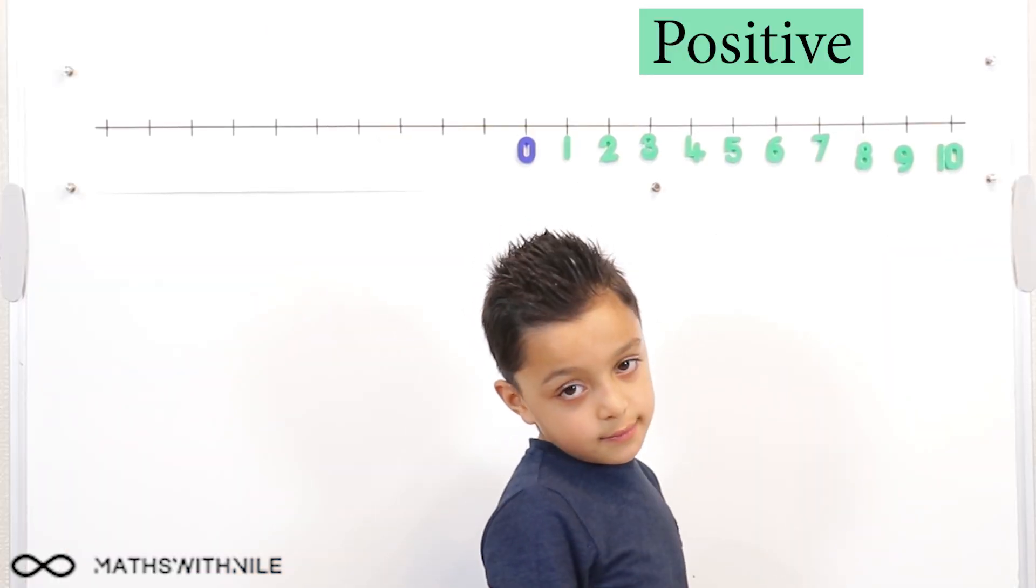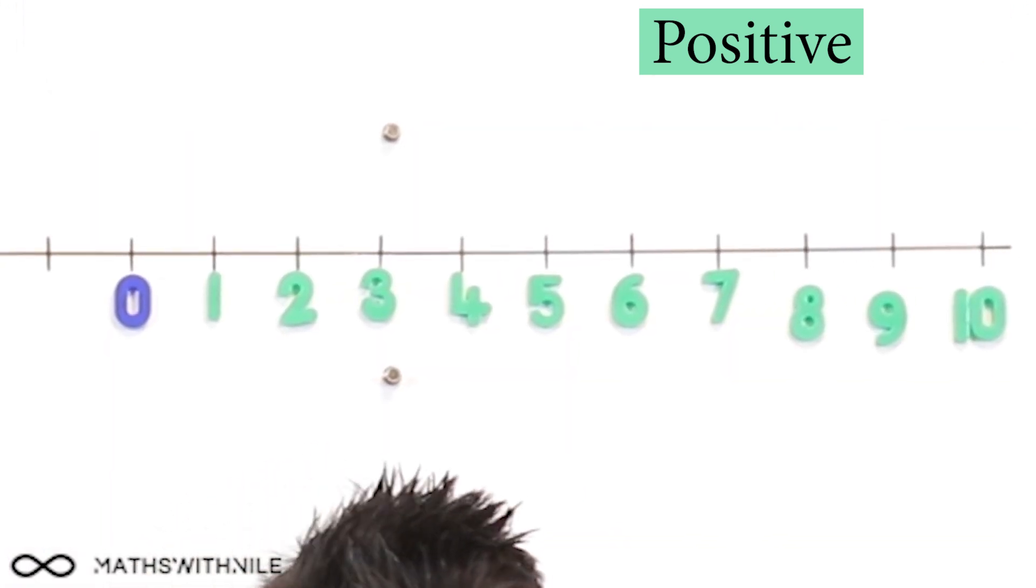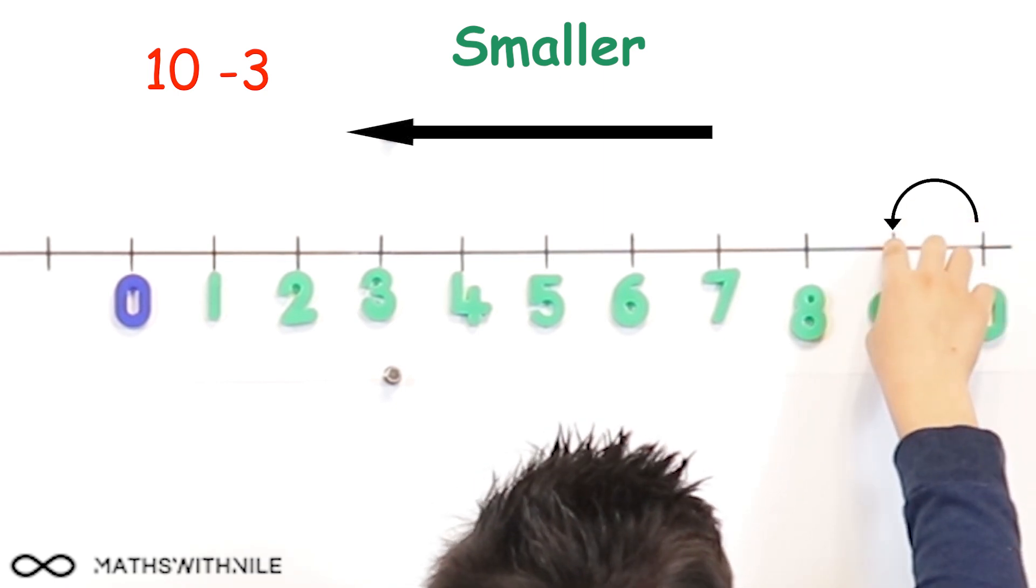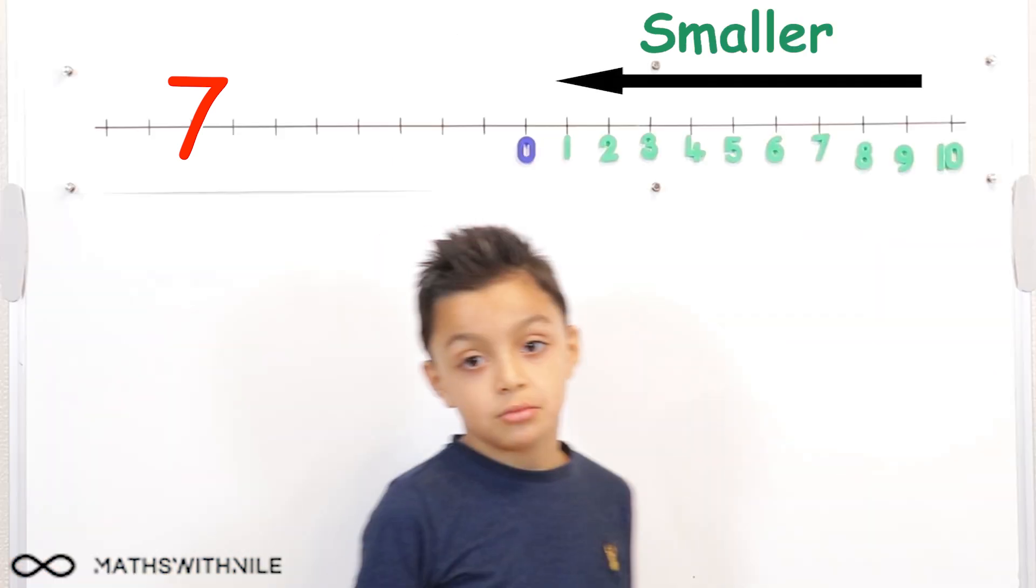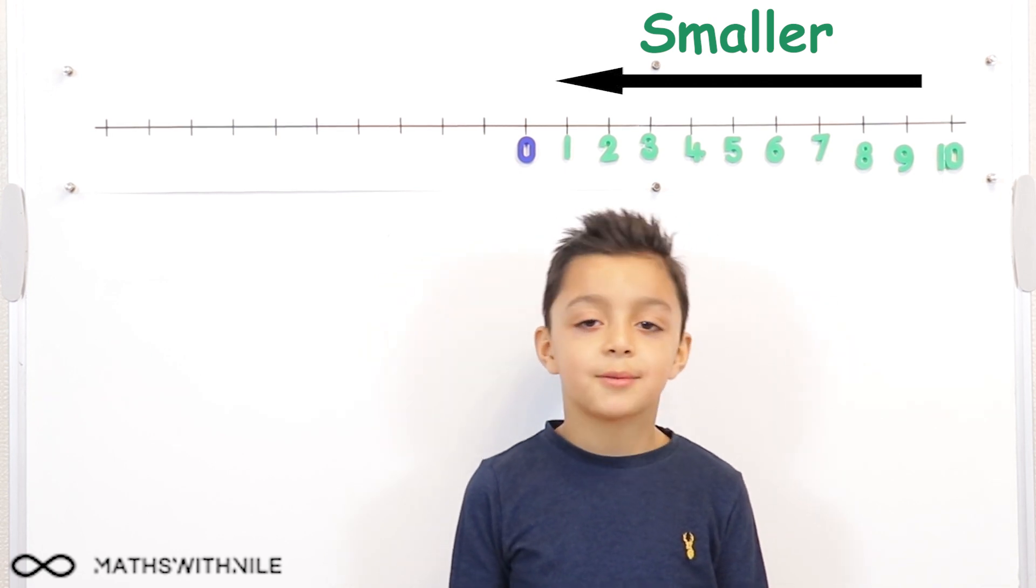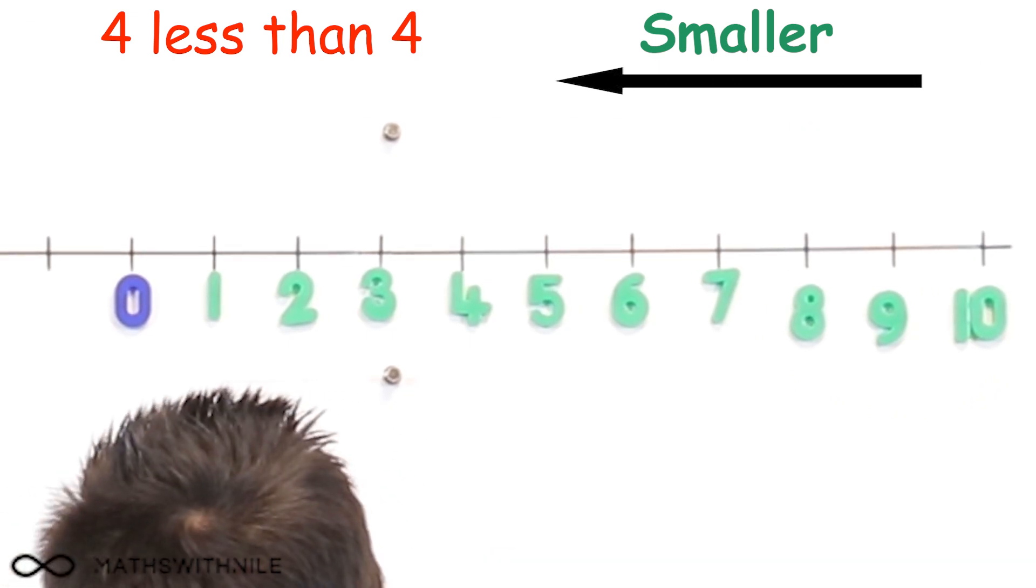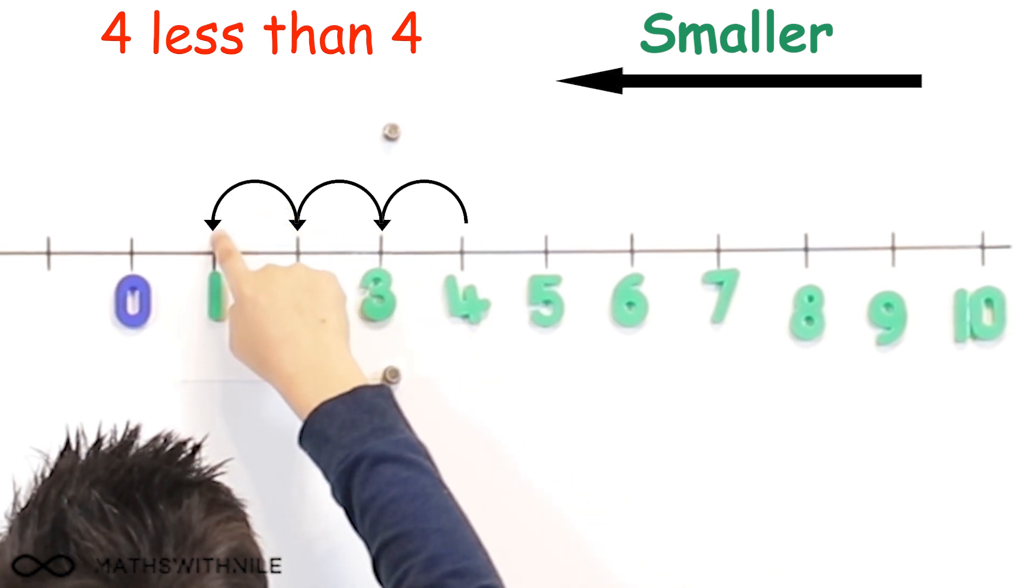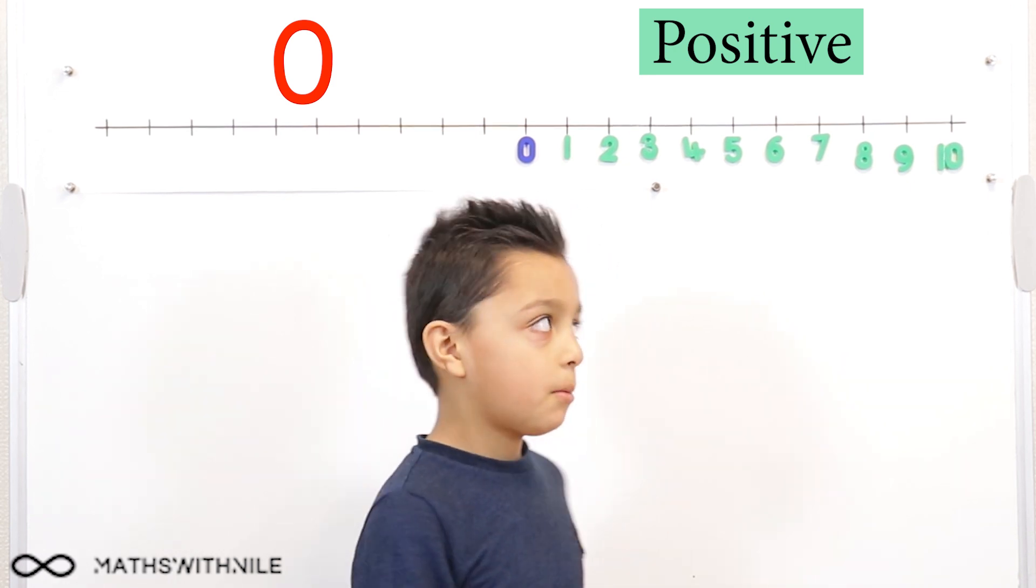Okay, so we move to the right when we're adding. What if we were subtracting? If you had to do ten take away three, what would you do? Ten take away one, two, three, seven! So the numbers get smaller when we move in what direction? Left. What about four less than four? Four less than four. One, two, three, four. Very good. Zero. Excellent.